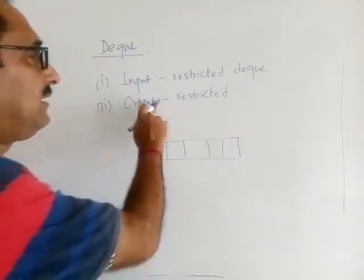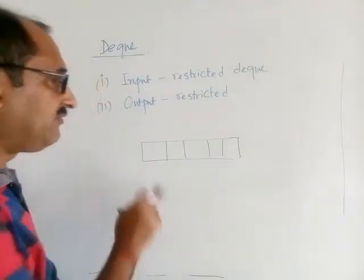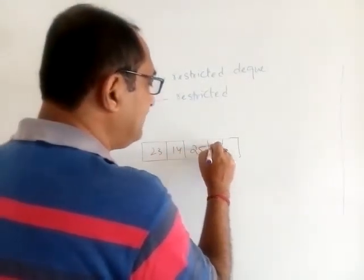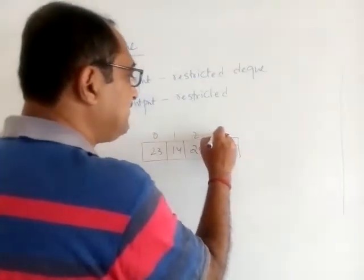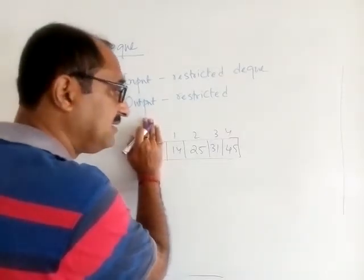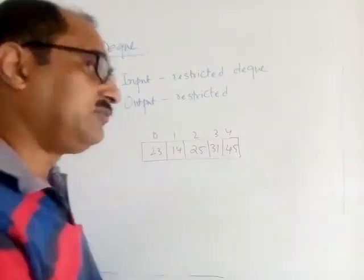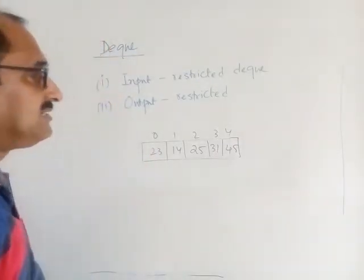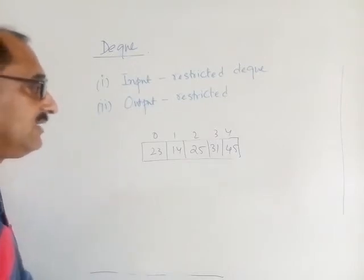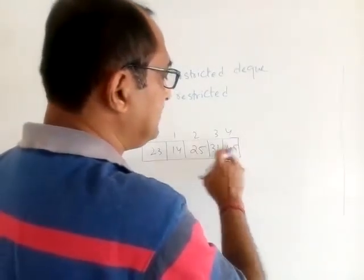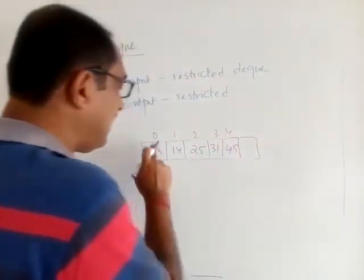In Output Restricted DQ, removal of an element can happen only from the front — so if the queue has elements, you can only remove from index 0. For example, using a list p, you must write p.pop(0) to remove from the front. However, insertion can take place from both ends.